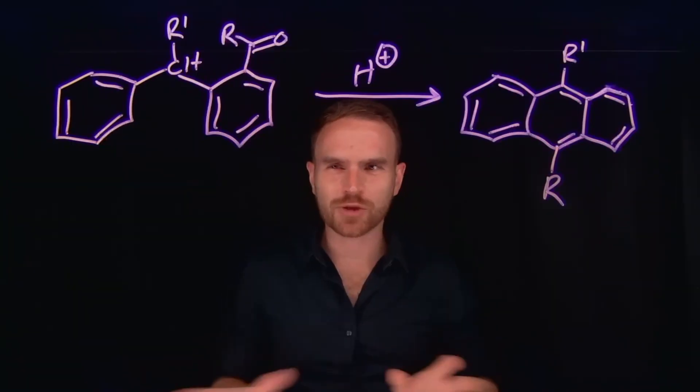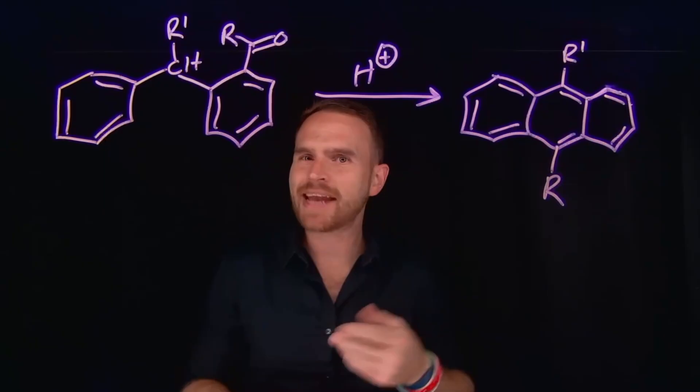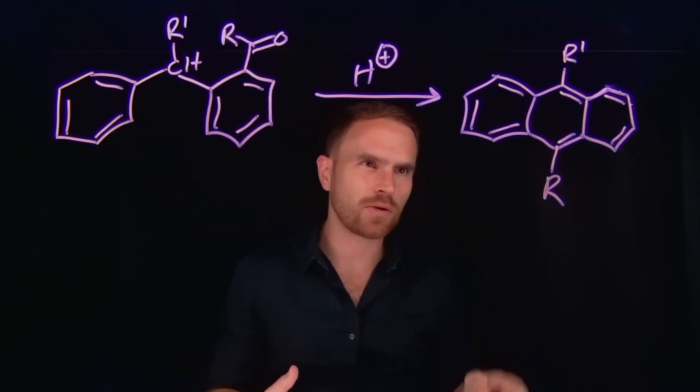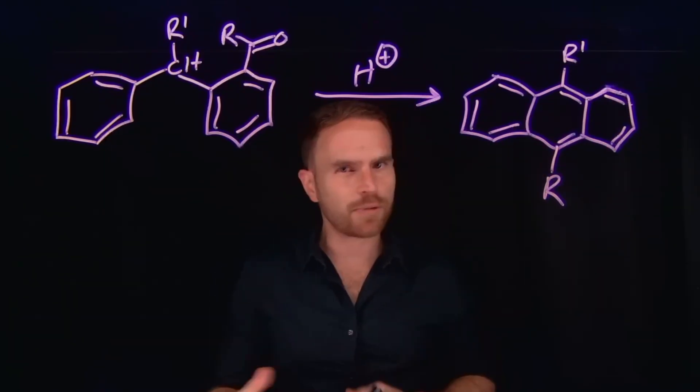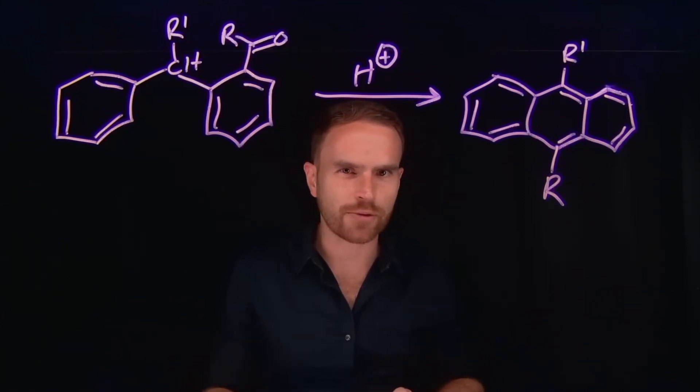It's a really cool reaction, in which we're taking this molecule, which has two benzene rings on it, and a ketone, adding a little bit of acid, and effectively making what's an anthracene derivative. And it proceeds via some pretty straightforward organic chemistry-type reactions that you've probably encountered before.